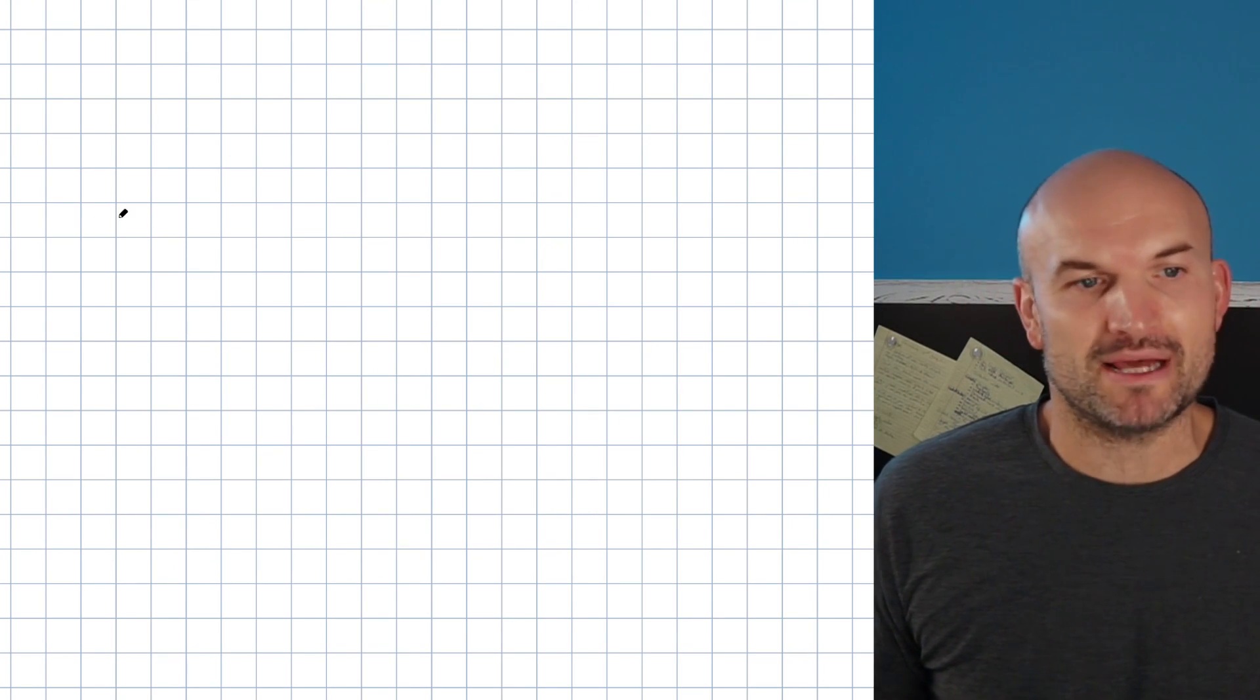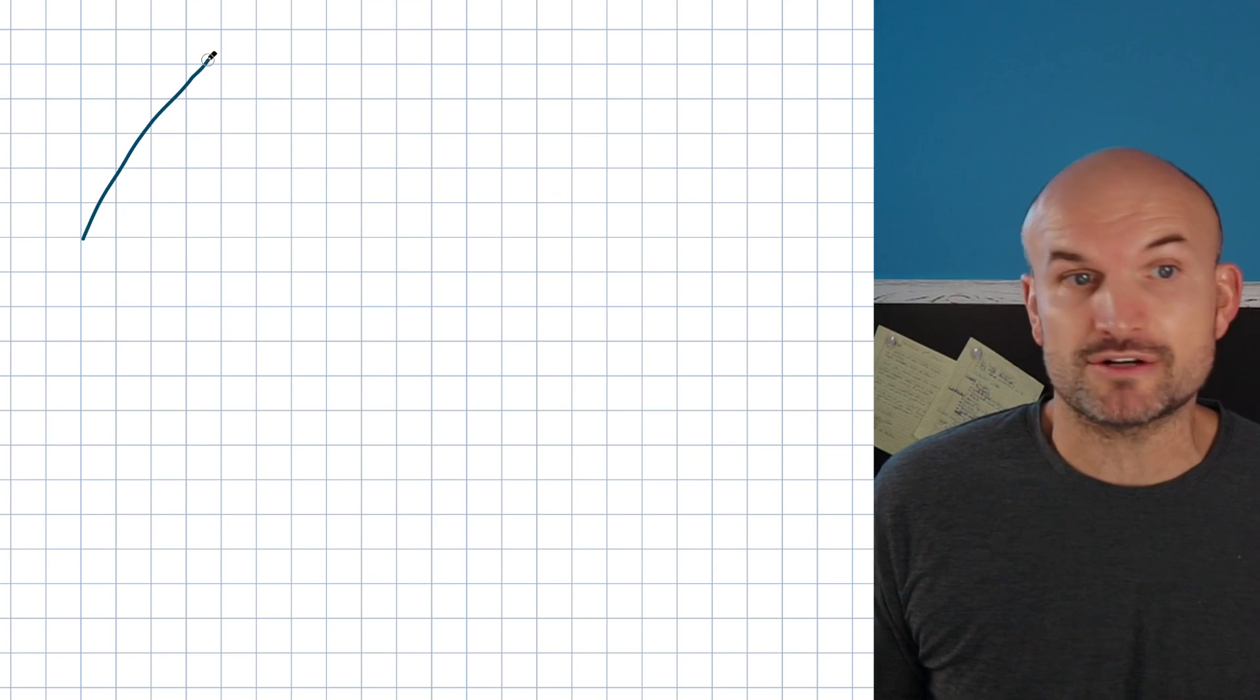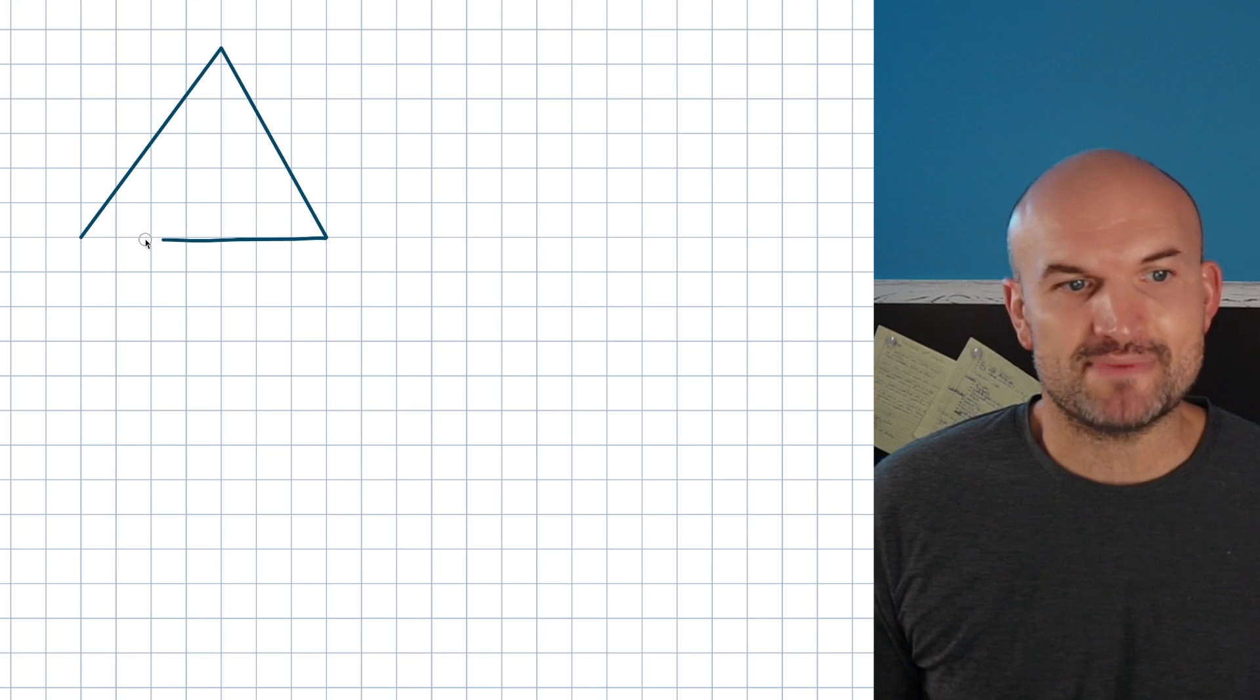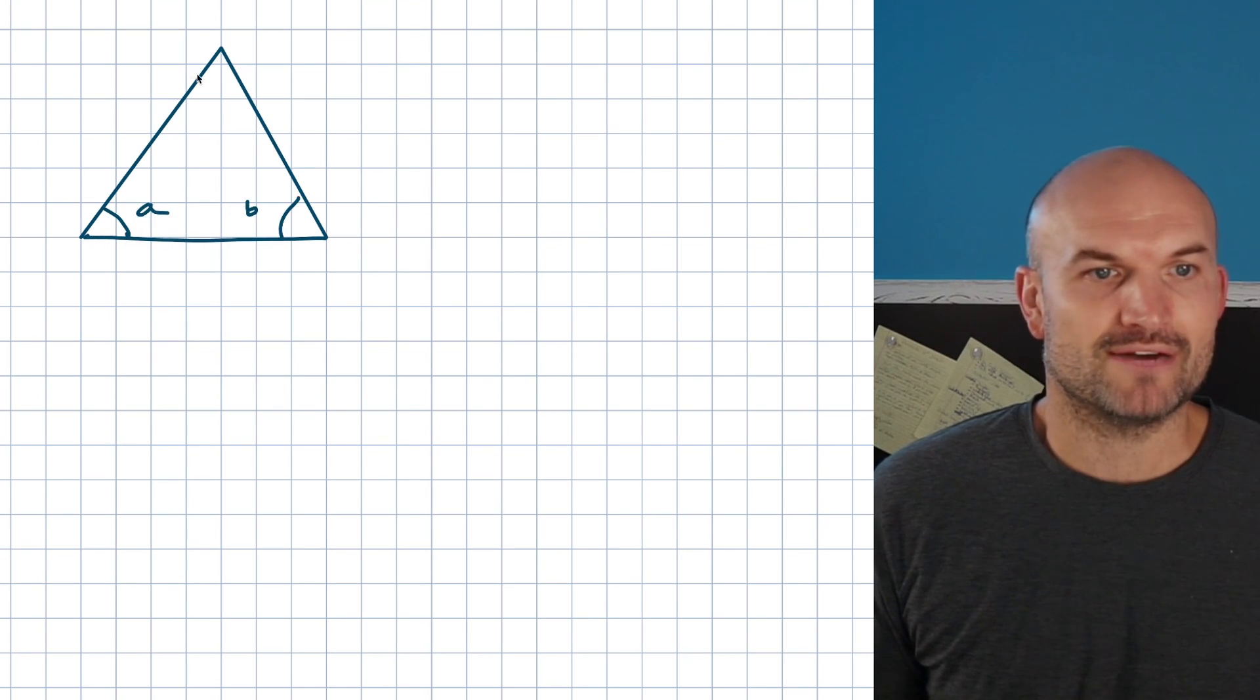The first property I think is probably the most advantageous for all students to remember is the interior triangle angle sum theorem. Basically, this is saying that when you have angles in a triangle, let's say whatever those angles be,